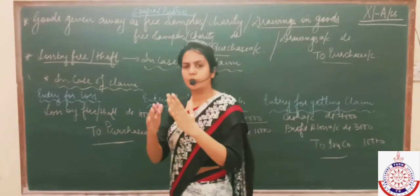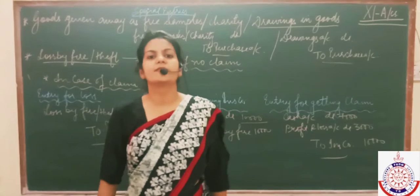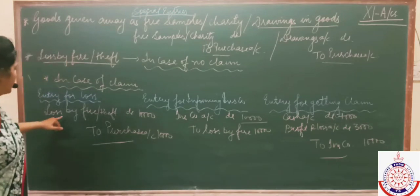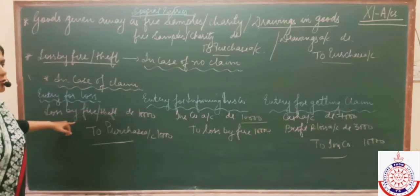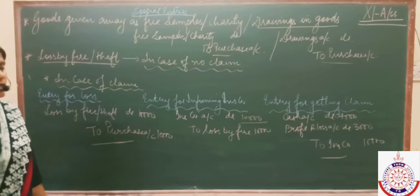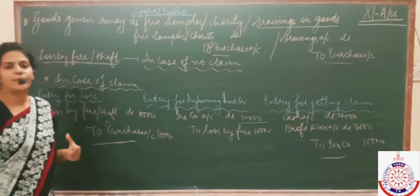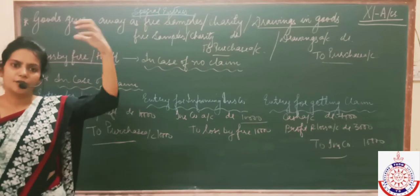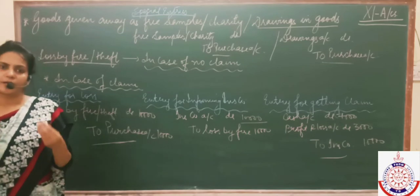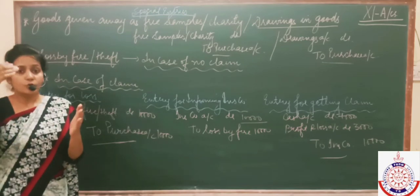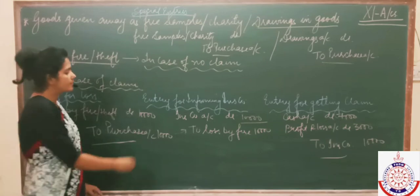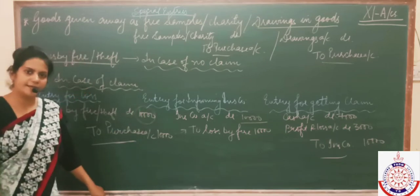To understand these three entries: assume goods worth 10,000 were destroyed in your godown. First entry — all losses are debited: loss by fire account debited 10,000 to purchases 10,000. We credit purchases because the balance of goods has been reduced, and to reduce a debit balance we credit it. Second entry — you inform the insurance company: insurance company account debited 10,000 to loss by fire account 10,000. You assume the insurance company will pay the full 10,000, shifting the loss to them.